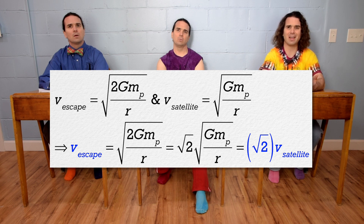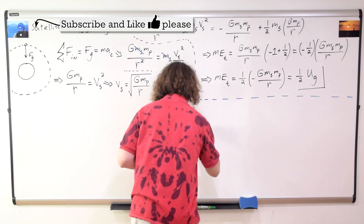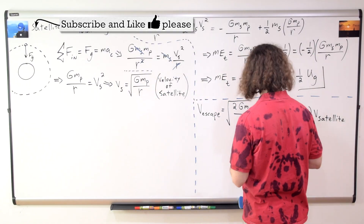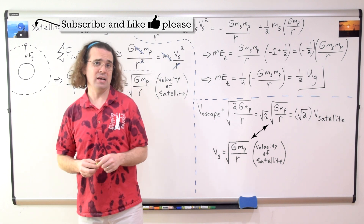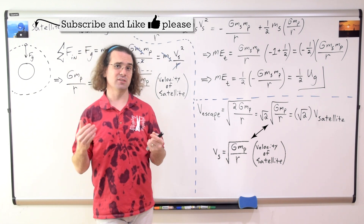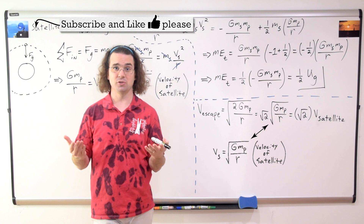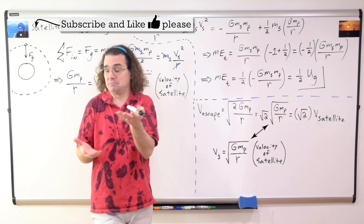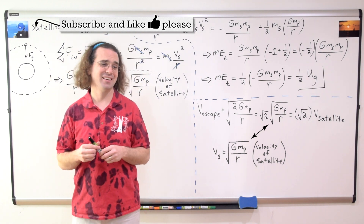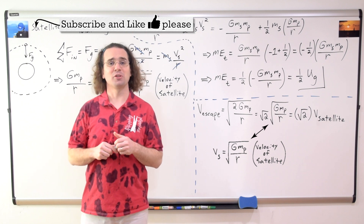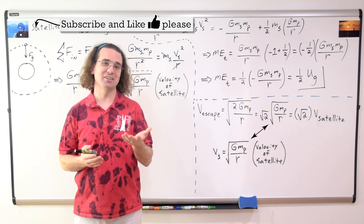Why is that? Beau, I do not know why the escape velocity of an object equals the velocity of a satellite times the square root of two. That's strange. Mr. P does not know the answer? Thank you very much for learning with me today. I enjoyed learning with you.